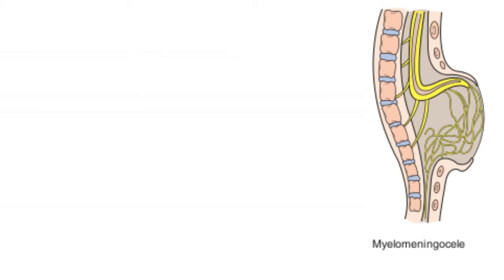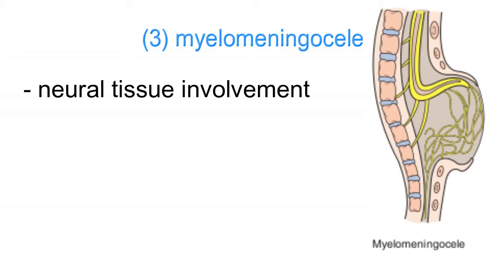In myelomeningocele, the only difference is that this sac will now contain neural tissue, which will result in lower limb paralysis and complete loss of sensation.